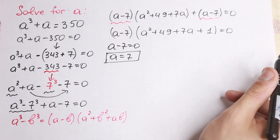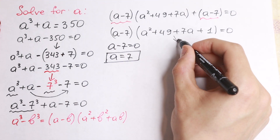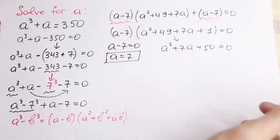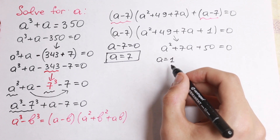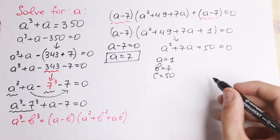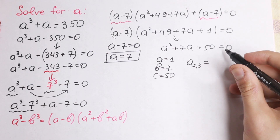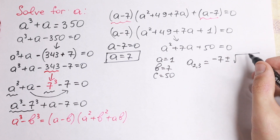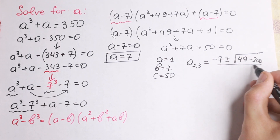But moreover, we can find another answer — another solution — because we have third power, so we will have no more than 3 roots. So let's solve the other equation: a square plus 7a plus 50 equals 0. This is a classic quadratic equation. So a equal to 1, b equal to 7, and c equal to 50. If we put all these values in our formula, we will have a₂ and a₃ equal to minus 7 plus or minus square root of b square minus 4ac, so 49 minus 200, all over 2.